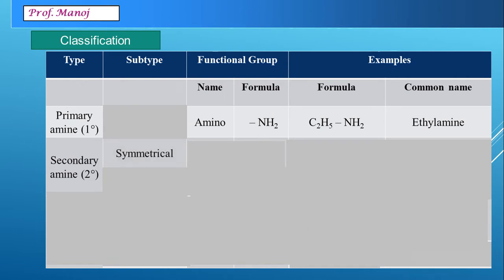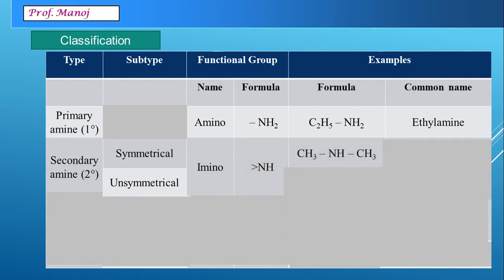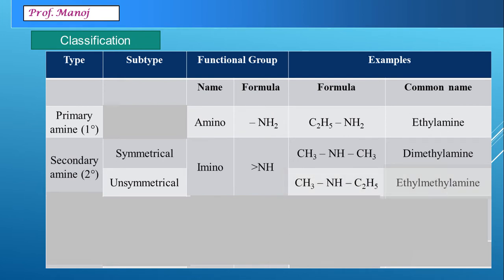The second type is called secondary amine. There are two types: symmetrical amine and unsymmetrical secondary amine. Both are given the general name imino group, shown with two bonds. For symmetrical amine, both groups connected to the nitrogen atom are similar — for example, dimethyl amine. For unsymmetrical amines, the groups will be different — for example, ethyl methyl amine.